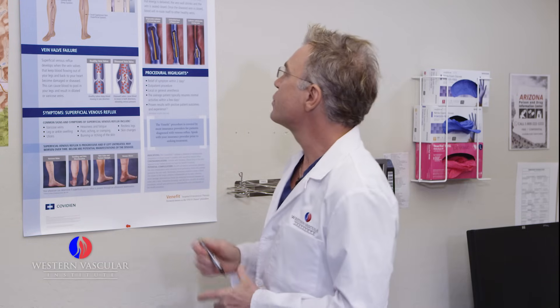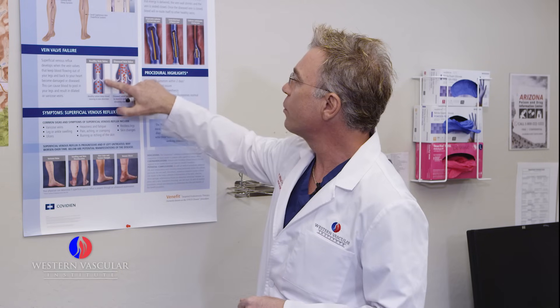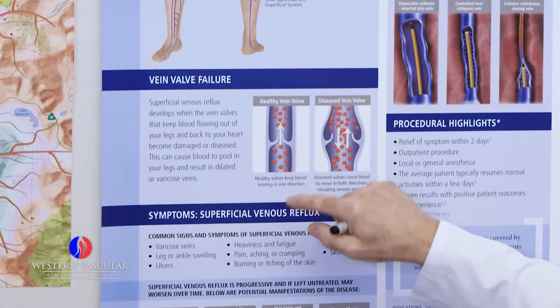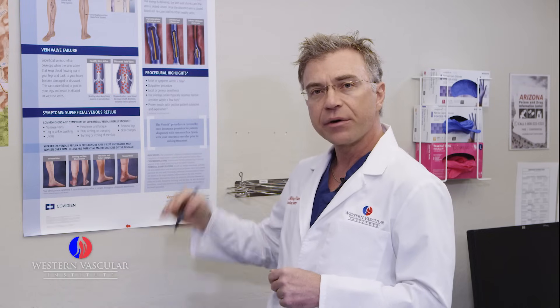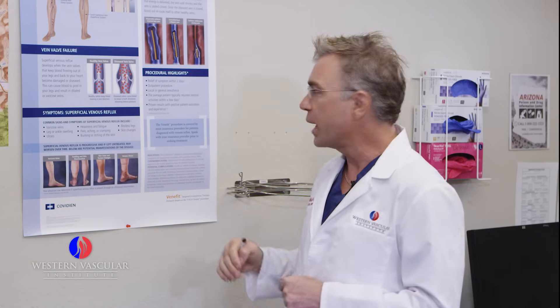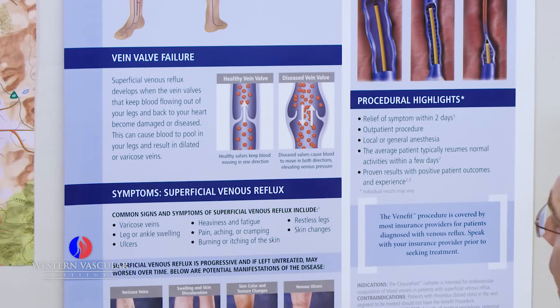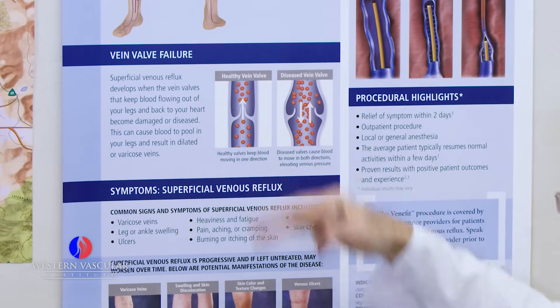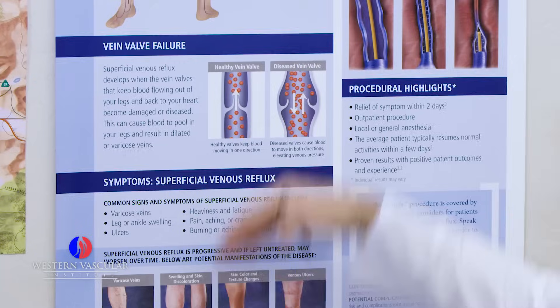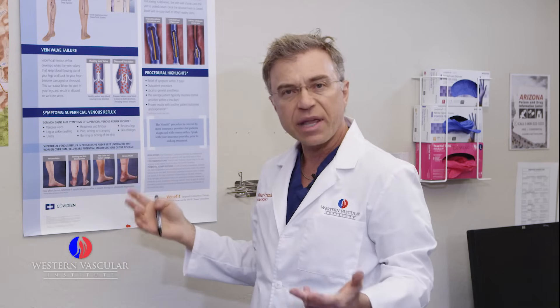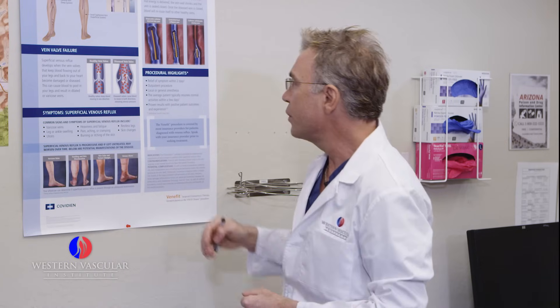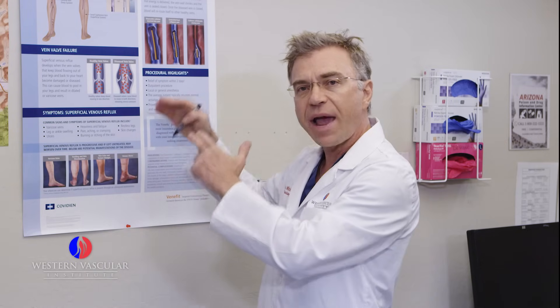What we look at with ultrasound is dilated veins and valve function. This is a typical normal healthy vein in the leg. These little structures in the middle are valves, located at various areas throughout the vein. Normally, blood in the lower leg goes through the vein and through the valves — the valves open to let blood up to the heart, then close to prevent blood from pooling down in the leg when we're standing or sitting. A healthy valve prevents gravity from making blood pool in the lower leg.